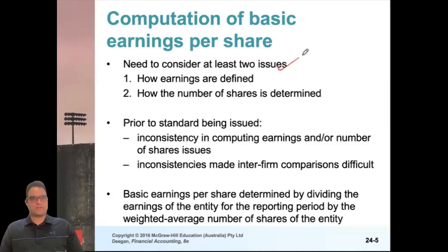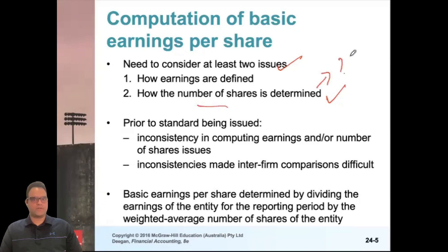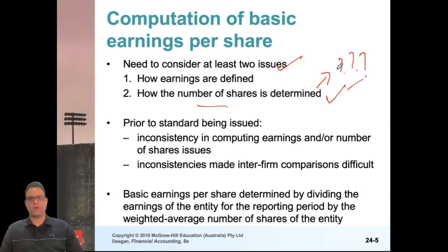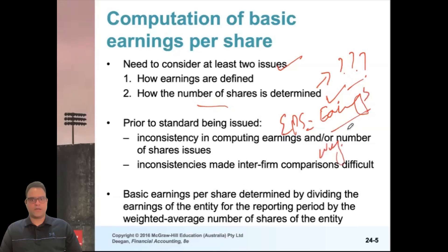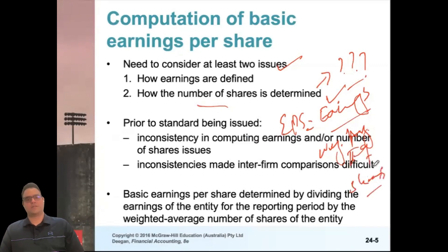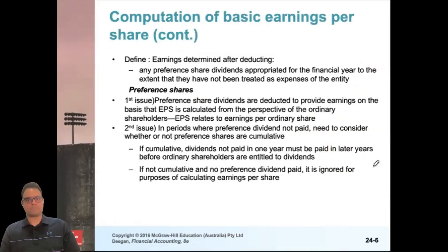The definition of EPS is essentially the formula. The key question throughout this chapter is how the number of shares is determined, since it changes from one scenario to another. The basic formula is: EPS = Earnings per company divided by the weighted average outstanding shares. The earnings figure used is profit after making payment for preference shareholders.